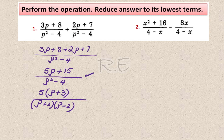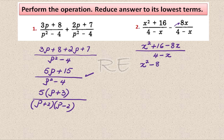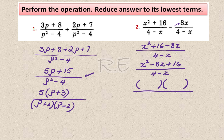x squared plus 16 divided by 4 minus x, minus 8x divided by 4 minus x. Same denominator, so we combine: x squared plus 16 minus 8x divided by 4 minus x, which rearranges to x squared minus 8x plus 16 over 4 minus x. The product is 16 and the sum is negative 8, so the two integers are negative 4 and negative 4 — this is a perfect square: x minus 4 times x minus 4 over 4 minus x.